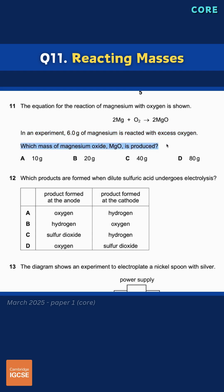When calculating reacting masses, we need to remember that the mass of the reactants is always equal to the mass of the products. The relative atomic masses of magnesium and oxygen are 24 and 16 respectively, which we can find out by referring to their mass numbers on the periodic table.